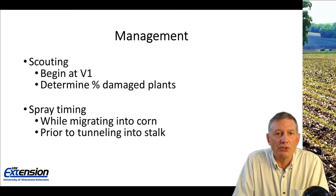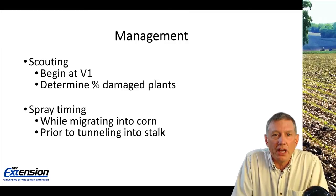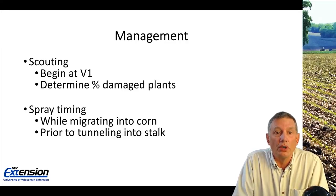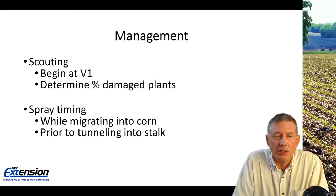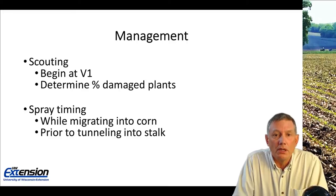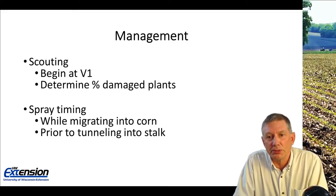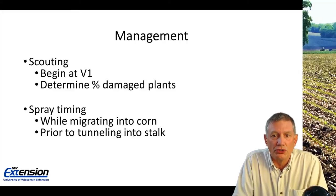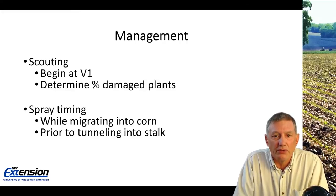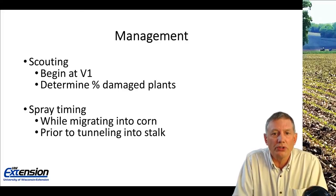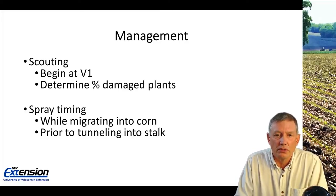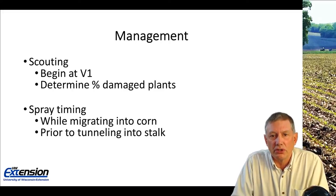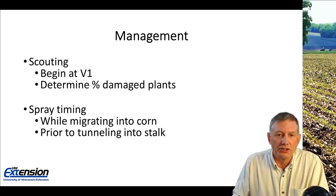For managing common stalk borers, start scouting at the V1 stage and determine the percent damaged plants. Your best spray timing — where you're going to get your best control — is that point when the larvae are migrating from the perennial grasses to corn, when they're going to be most exposed. You certainly have to make sure you get that spray application in prior to the point where they have tunneled into the corn stalk, because once they have tunneled in, you cannot control them with an insecticide.